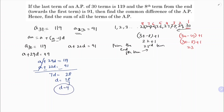Substituting d = 4 back: a + 22 × 4 = 91, so a + 88 = 91, giving a = 3. We have found the common difference d = 4 and first term a = 3.